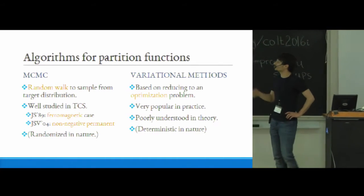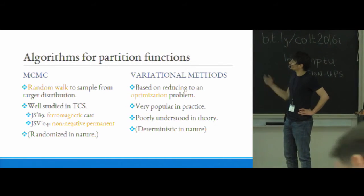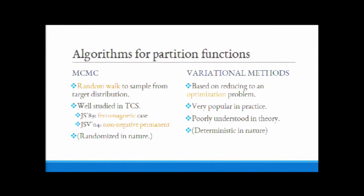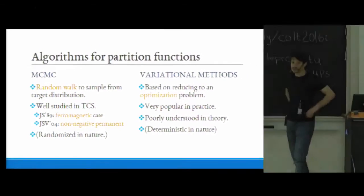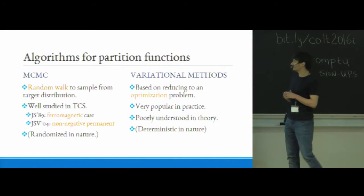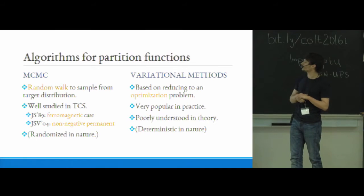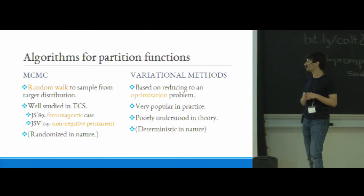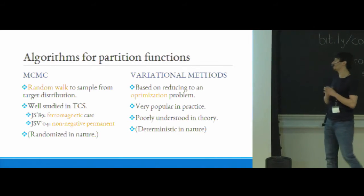So how might you go about calculating these partition functions? So if you sort of round up methods in theory and in practice, on a coarse grain there are essentially two types of approaches. The first is MCMC methods, which I'm sure most of you are familiar with, but the idea is essentially that you use some kind of random walk to sample from the distribution that's specified by the Ising model, and then you use these samples to somehow calculate the partition function. These are pretty well studied in theoretical CS, and arguably sort of the pinnacle of this line of research are two results, one due to Jerrum and Sinclair, and one due to Jerrum, Sinclair, and Vigoda, on calculating the partition functions in the ferromagnetic case, which is when all of the potentials are non-negative, and similarly in the case of the non-negative permanent.